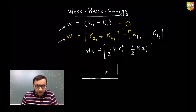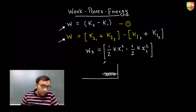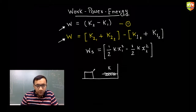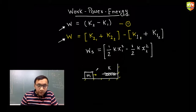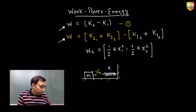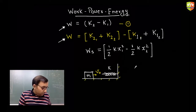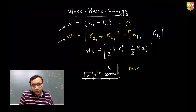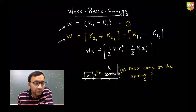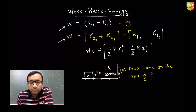Starting with the simplest question: there is a spring with constant k, and a mass m coming towards the spring with velocity v₀. Use the work-energy theorem to find the maximum compression in the spring.